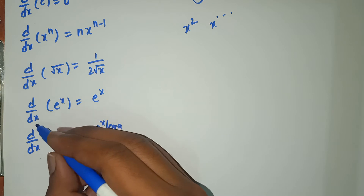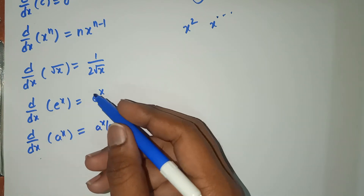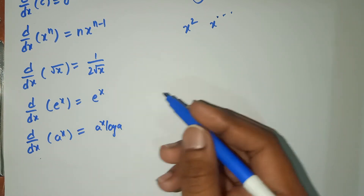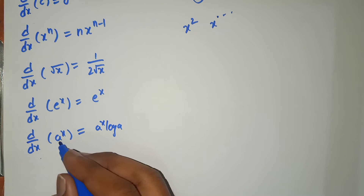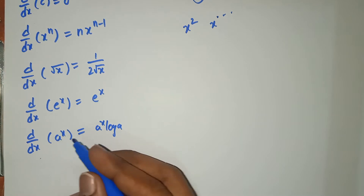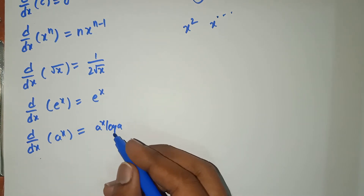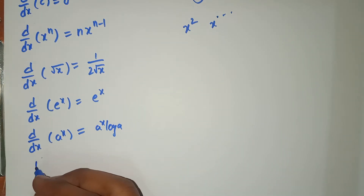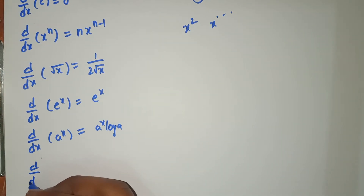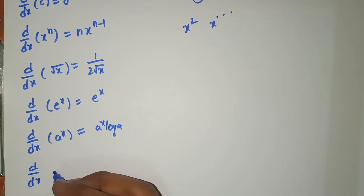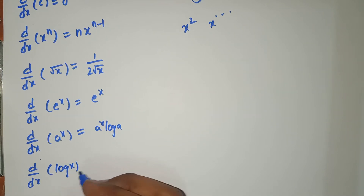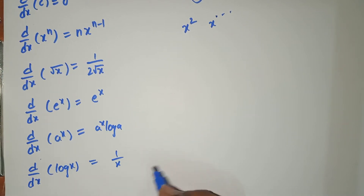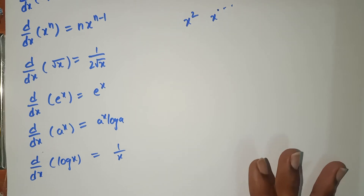d by dy of e power y equals e power y. Here, a power x equals a power x log a. d by dx of log x equals 1 by x.